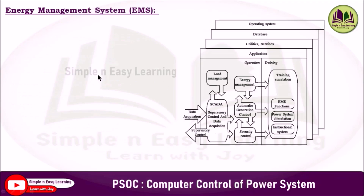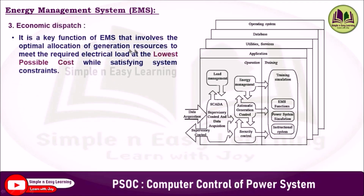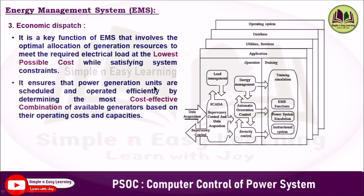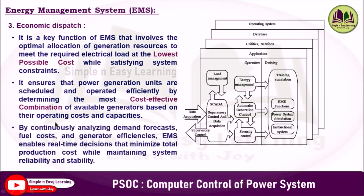The third function is economic dispatch. It is a key function of EMS that involves the optimal allocation of generation resources to meet the required electricity load at the lowest possible cost while satisfying system constraints. It ensures that power generation units are scheduled and operated efficiently by determining the most cost-effective combination of available generators based on their operating cost. By continuously analyzing demand forecasts, fuel costs, and generator efficiencies, EMS enables real-time decisions that minimize total production cost while maintaining system reliability and stability.